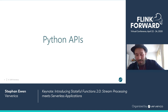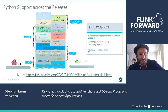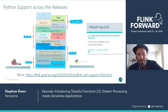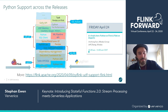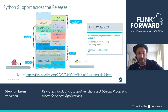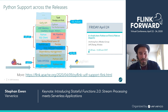Another pretty big thing the community has been working on in the last releases is support for Python. The Python features have developed quite impressively over the last releases. In 1.9 it started with simple support for the Table API in Python; in 1.10 it added user-defined functions, including dependency management for Python libraries; and in 1.11 there's a pretty big roadmap for Python as well, including better integration with observability tools, the metric system, and integration with popular libraries like pandas. There's also a deep dive talk on Friday covering Python together with notebooks.